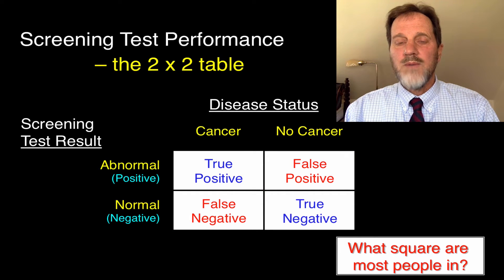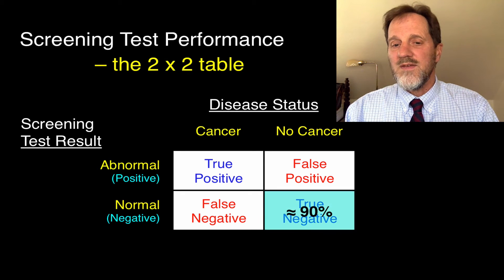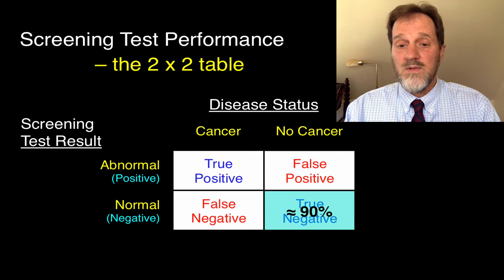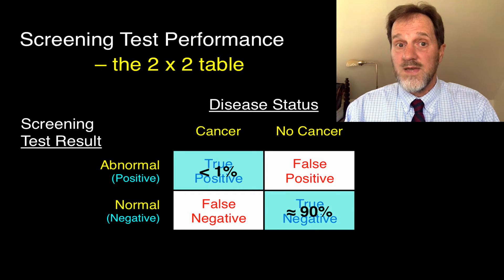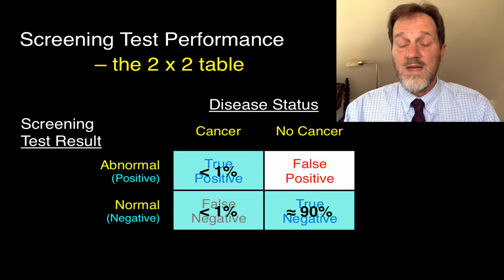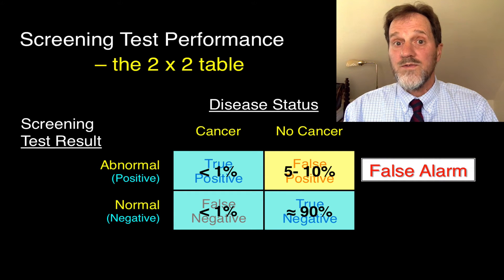You might wonder which square most people fall into. In a screening situation, you're testing people with no signs or symptoms of the disease, so most test results will fall in the truly negative category. Most people don't have cancer. True positives are pretty rare — less than 1%. Similarly, not many false negatives — also less than 1%. But false positives will be somewhere in between. Roughly 5 to 10% of cancer screening tests will be falsely positive — false alarms.